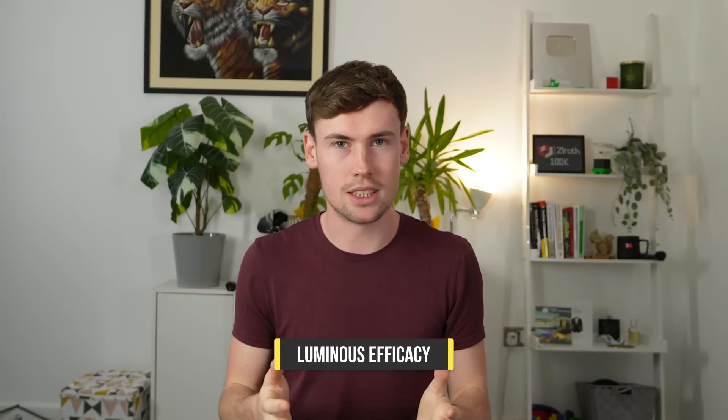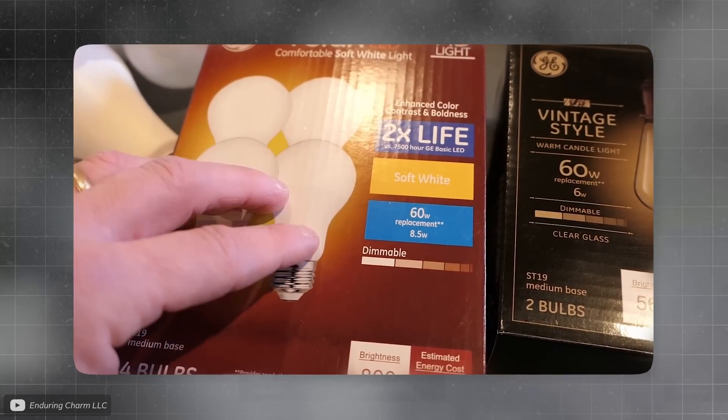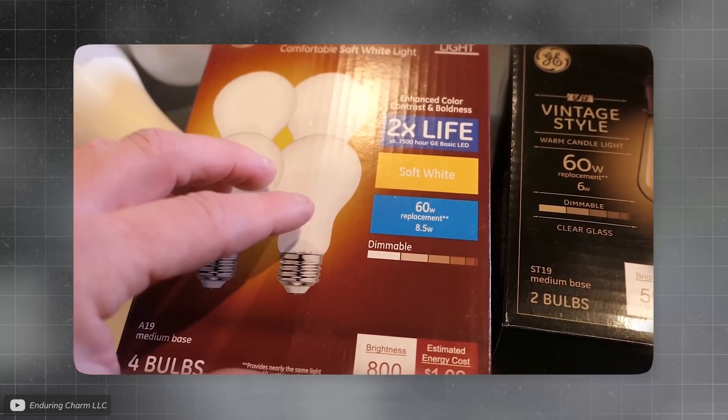These two types of efficiency combine into luminous efficacy. It gives a value of how much light can be perceived by the human eye compared to the amount of electricity consumed to make it, and is what goes into the energy efficiency ratings of light bulbs.